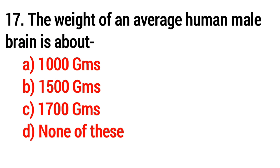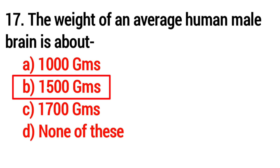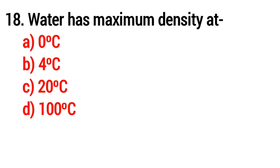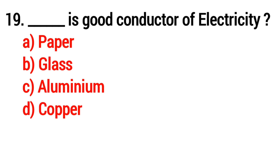Question 17. The weight of the average human male brain is about — Option B: 1500 grams. Question 18. Water has maximum density at — Option B: 4 degrees Celsius. Question 19. Blank is a good conductor of electricity — Option D: Copper.